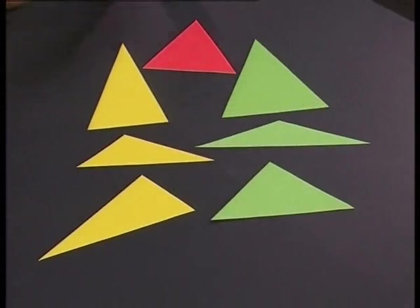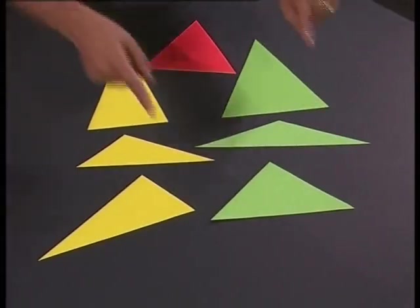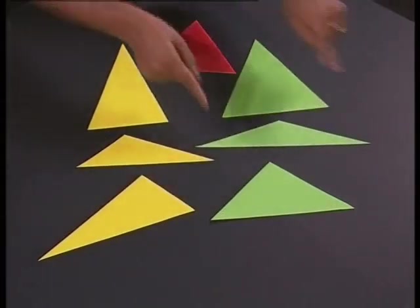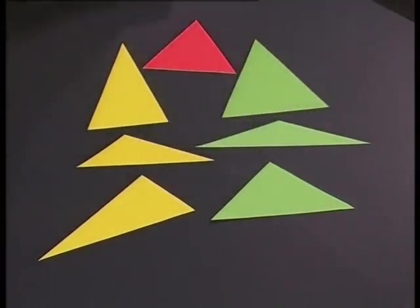Here we have all the isosceles triangles. Remember we have two equal sides and two equal angles. Here we have a right angled isosceles triangle, obtuse angled isosceles triangle, and acute angled isosceles triangle.